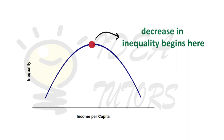This was a brief overview of the Kuznets Curve, which shows the relation between economic inequality and economic growth with an inverted U-shaped curve.